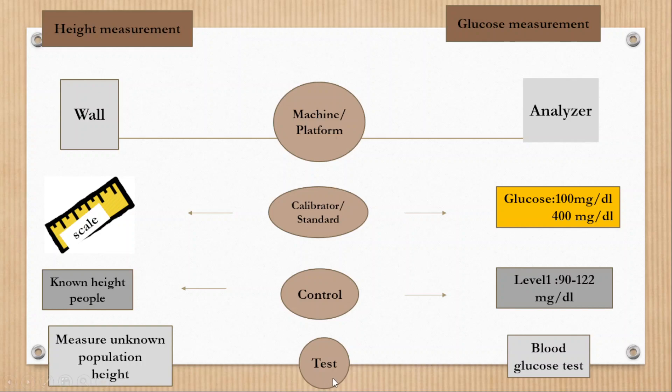Test method - now in case of height measurement, we can measure the height of unknown people because the process is well calibrated and control also passed. Similarly, in case of glucose measurement, we can test blood glucose of unknown sample.